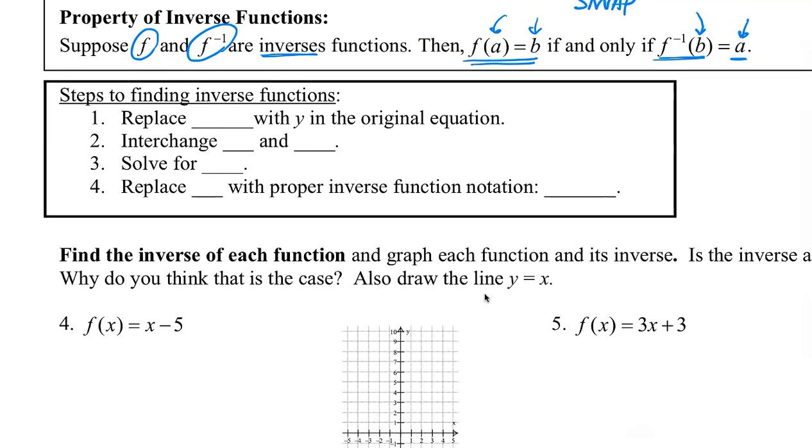Steps to finding inverse functions: We'll replace the notation like the f(x) notation with y in the original equation. That makes it a little easier for us. We'll interchange or swap x and y - this is the swap step. And then once we interchange x and y, we solve for y. And then we'll replace y back to the correct and proper inverse notation, which is that negative 1 looking exponent. Really, the main two steps are step 2 and 3. Steps 1 and 4 is just helping us set up the problem.